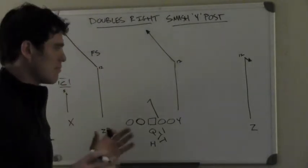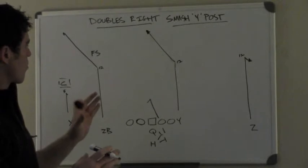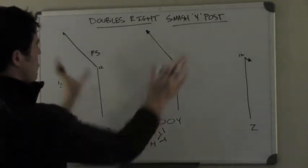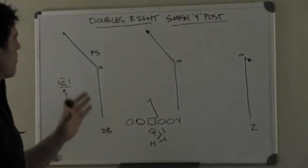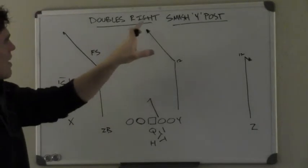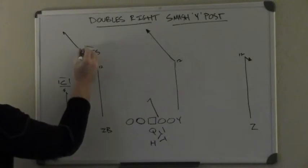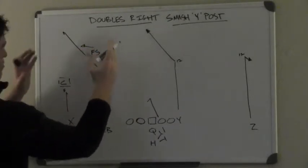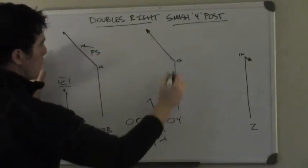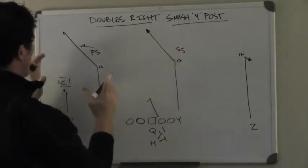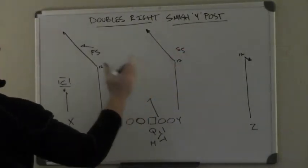What I really love about this play, a lot of times you see teams run smash concepts on both sides of the field, and that's fine. But the great thing about doubles right smash Y post is that if the free safety is being too aggressive to the corner there, not respecting his other half of the field, the post is going to come in right behind where he vacated.